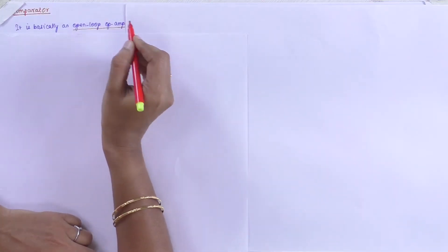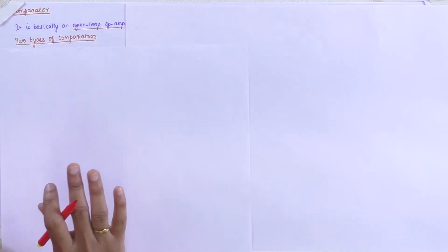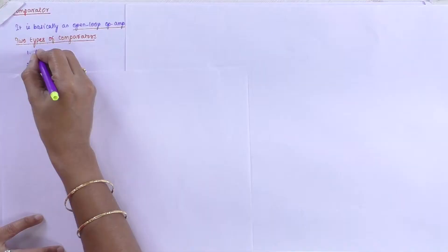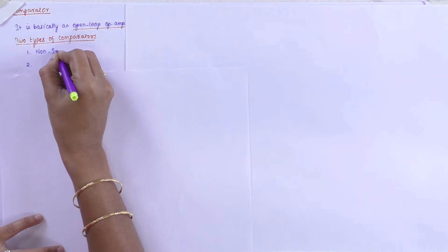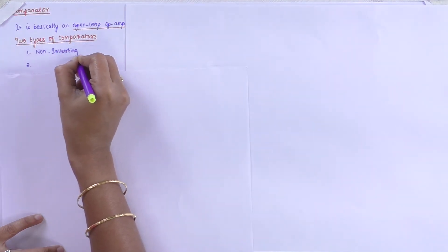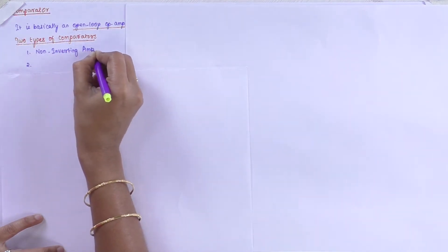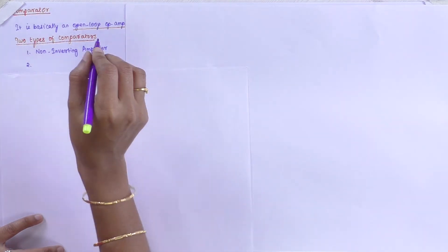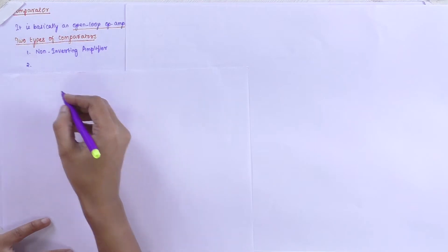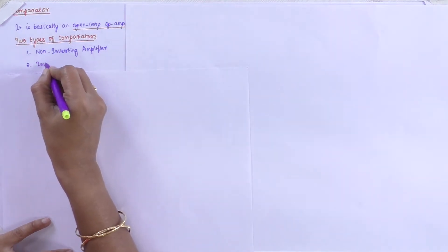We are going to discuss about two different types of comparators. Coming to the two types, we have already discussed the inverting amplifier and the non-inverting amplifier. This comparator is classified into the inverting type and the non-inverting type. The first thing we are going to discuss is the non-inverting comparator, where the non-inverting is the positive terminal and the inverting will be the negative terminal.